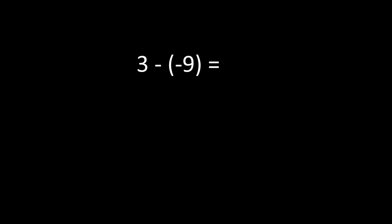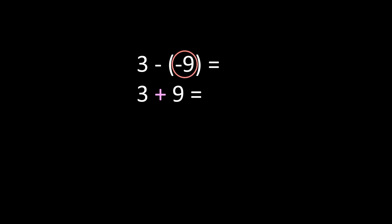In this example we have 3 minus negative 9, and we'll use our subtracting integer rules. The first number, 3, remains positive 3. Then we change the subtraction to addition, and we change the sign of our second integer — negative 9 becomes positive 9. Now we have 3 plus 9. We're adding integers with the same sign, and it also looks like a basic addition problem, so 3 plus 9 is positive 12. So 3 minus negative 9 is positive 12.